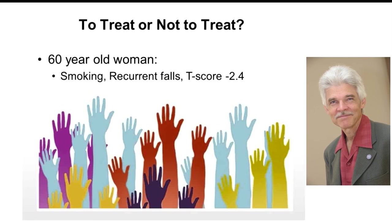This is a challenging situation for many. When we see patients, the question arises: to treat or not to treat. The case scenario here is a 60-year-old woman, smoker, recurrent falls, with a hip T-score of minus 2.4. This is the kind of situation that crops up regularly in offices, where the conundrum is that this individual is not quite osteoporotic by her T-score, but has additional risk factors — how do we factor that into the decision-making process?